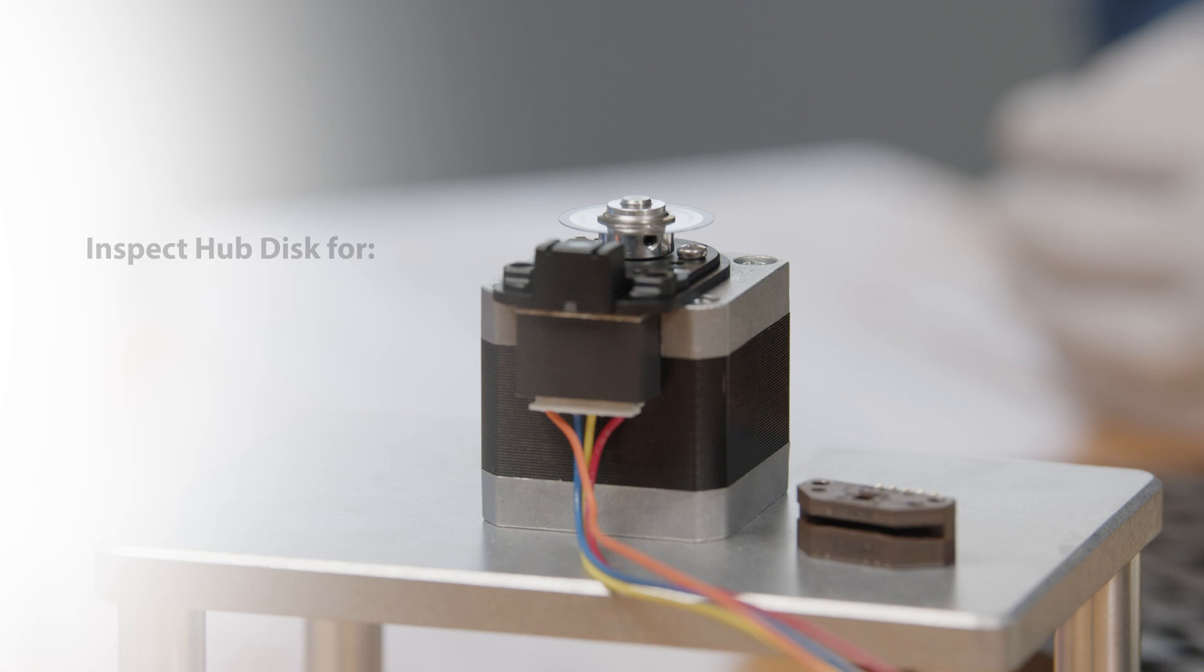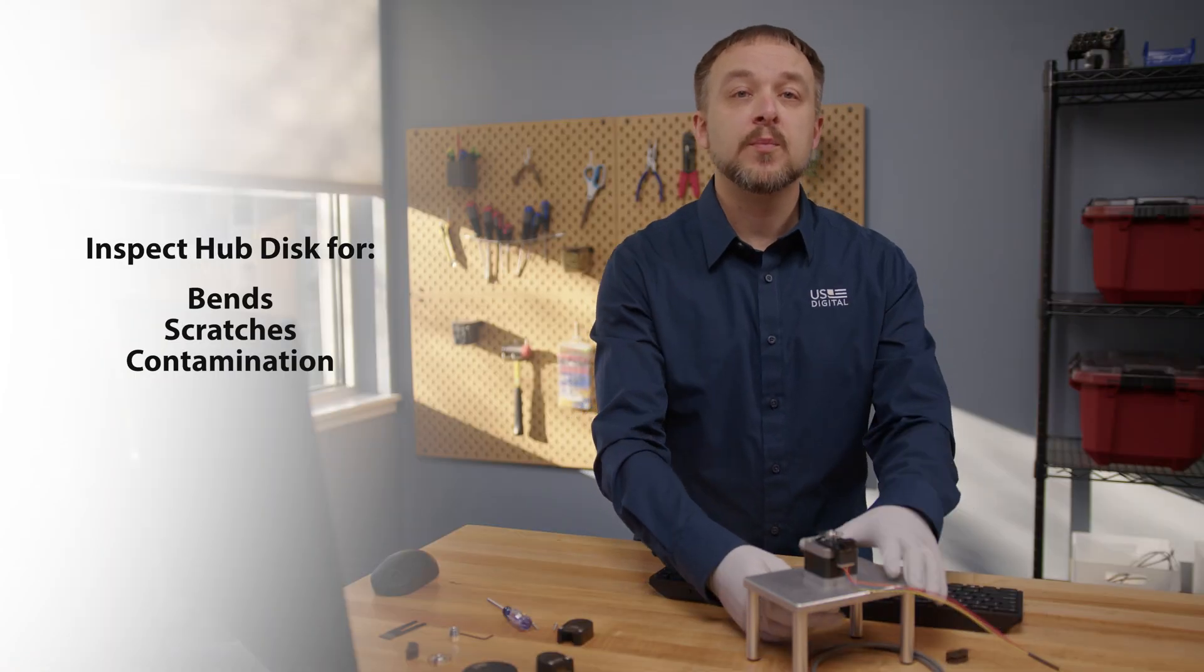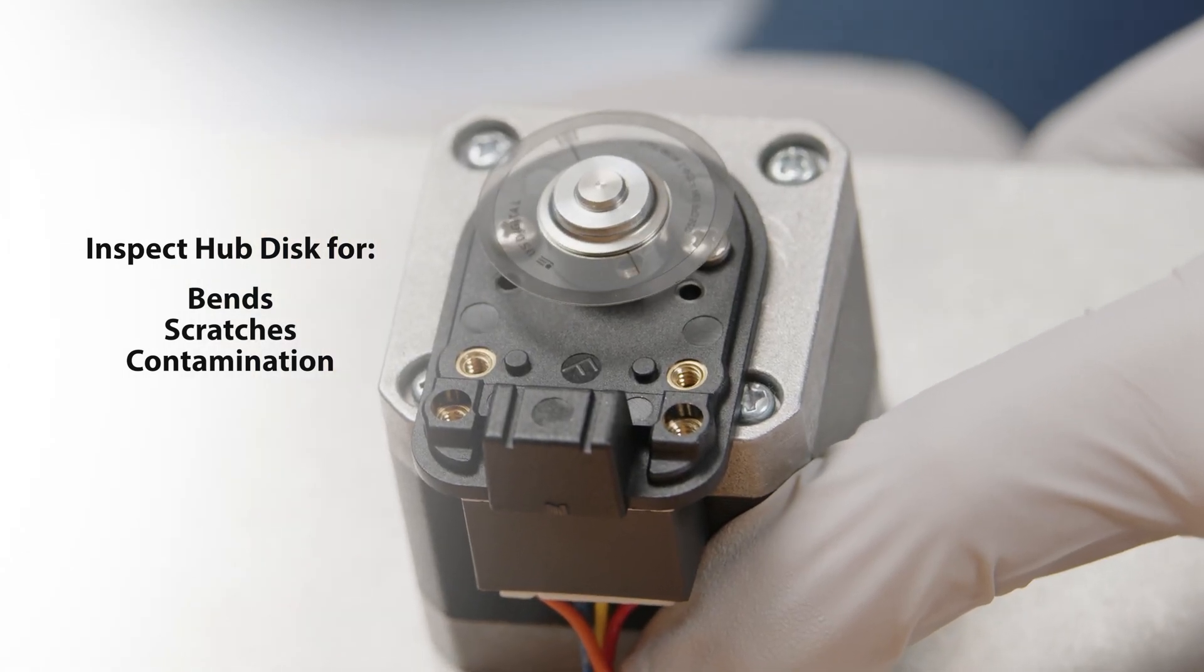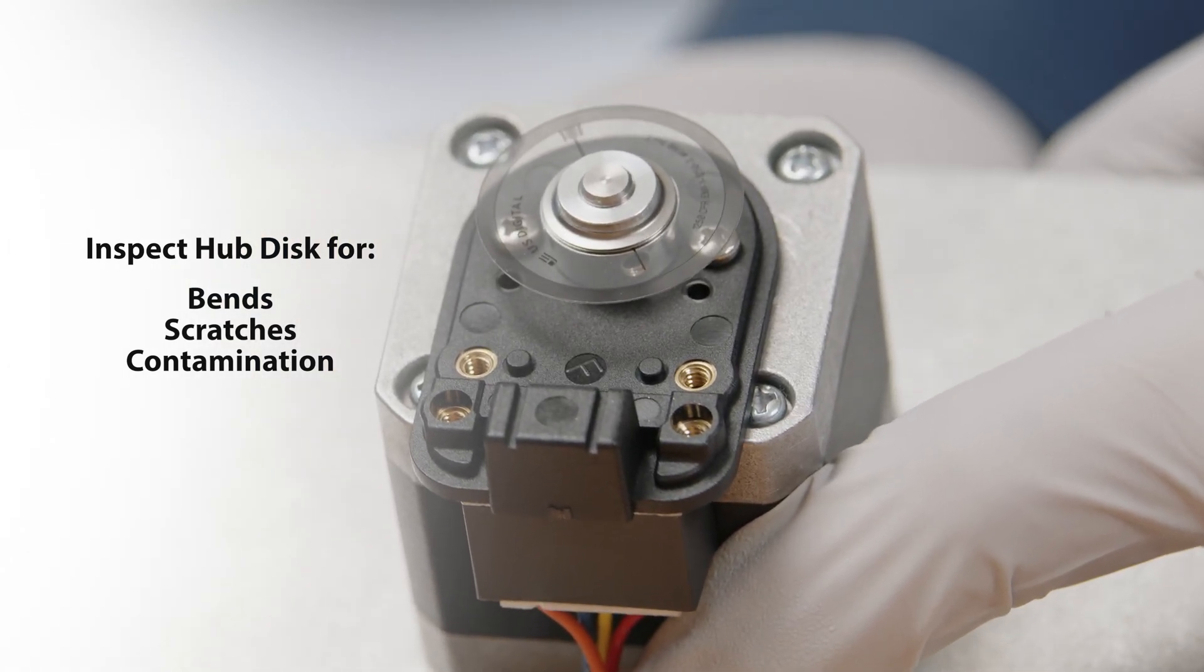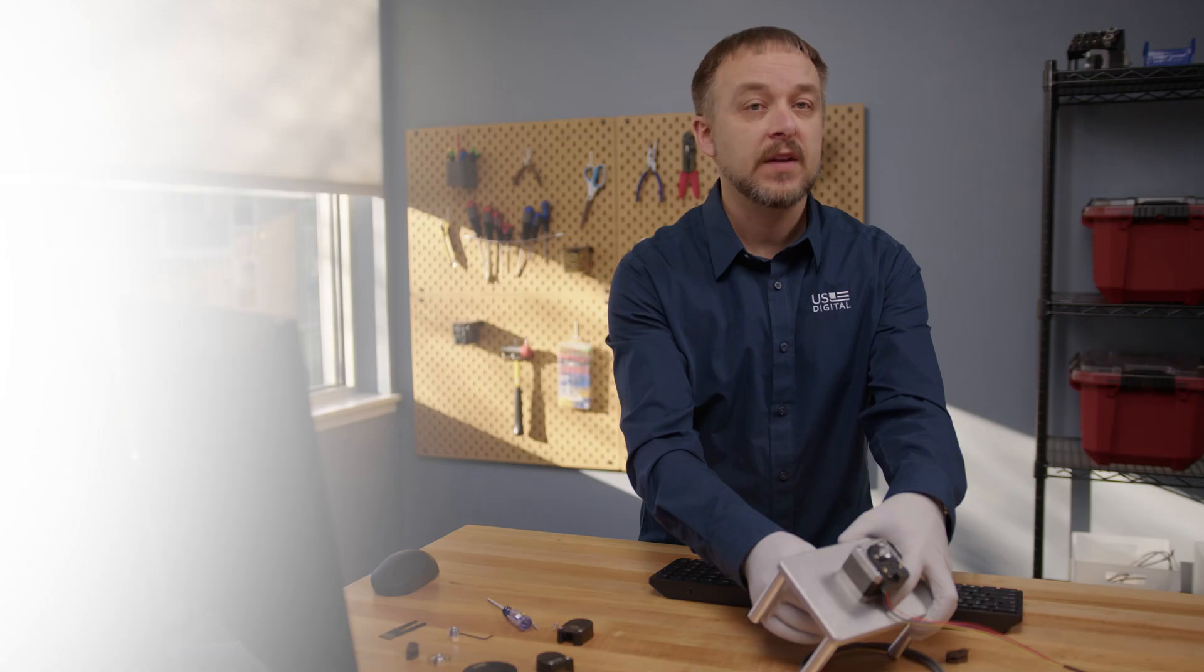First, let's visually inspect the hub disk for any damage. We're looking for larger issues such as bent, scratched, or contaminated disks. Small dust particles or fingerprints shouldn't be an issue. We're talking about larger problems that impact multiple lines or the overall shape of the disk.